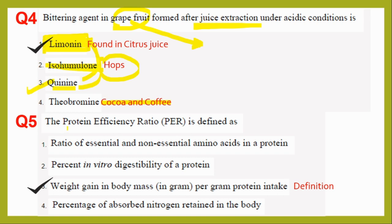Question five is about the Protein Efficiency Ratio — I call these 'sitter questions.' Just read and tick the answer to save time. This is a definition-based question and one should not get it wrong with serious preparation. The definition of PER is: weight gain in body mass per gram of protein intake. It is in the GATE syllabus and one should go through it.